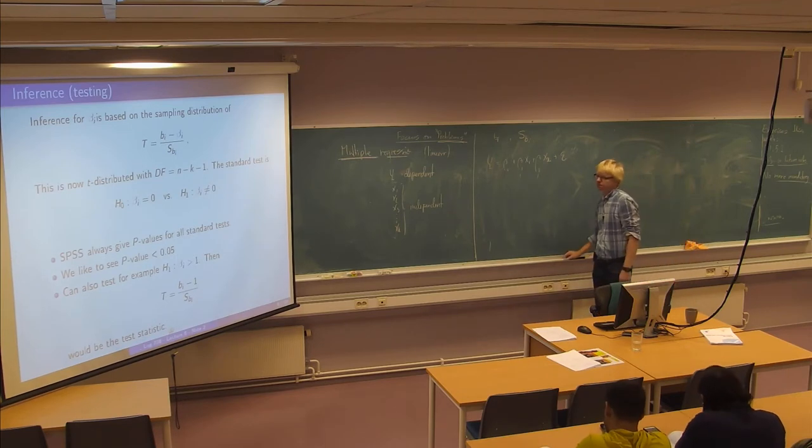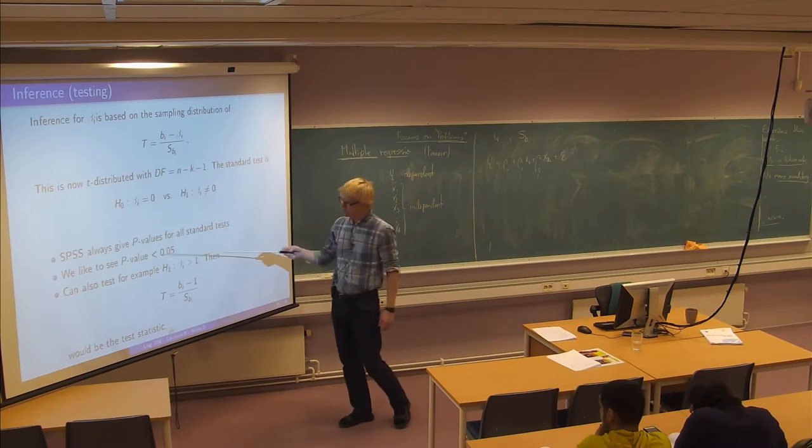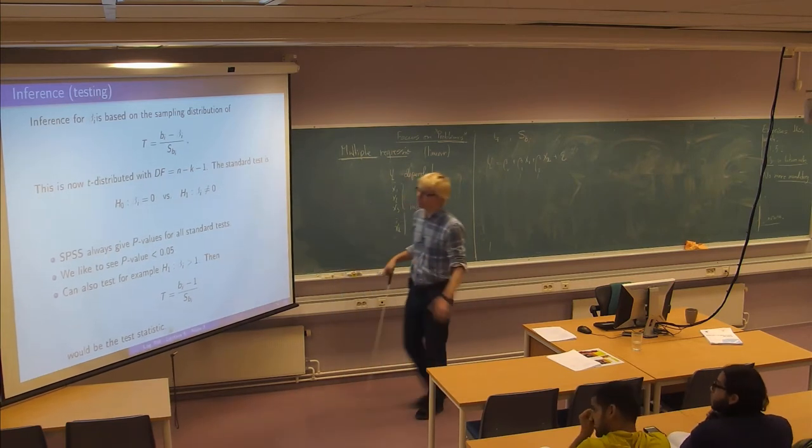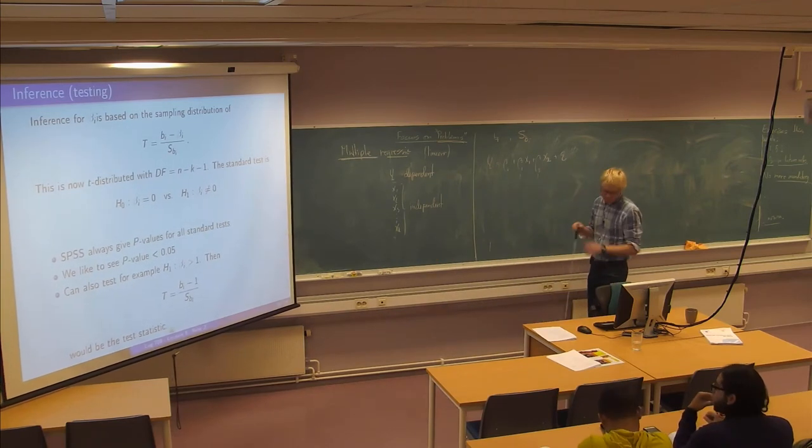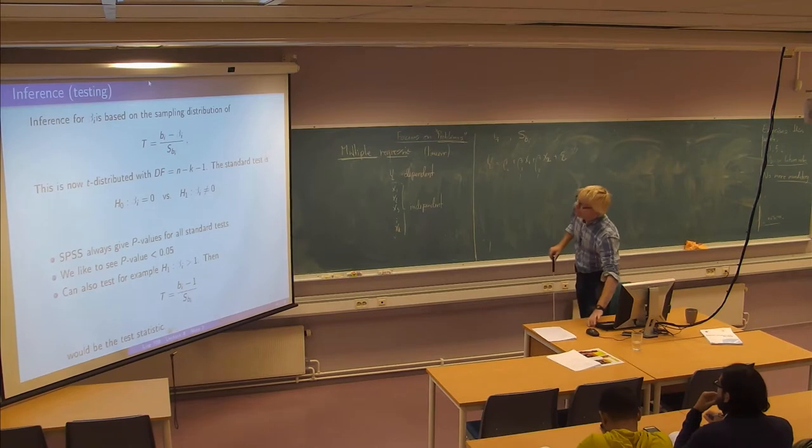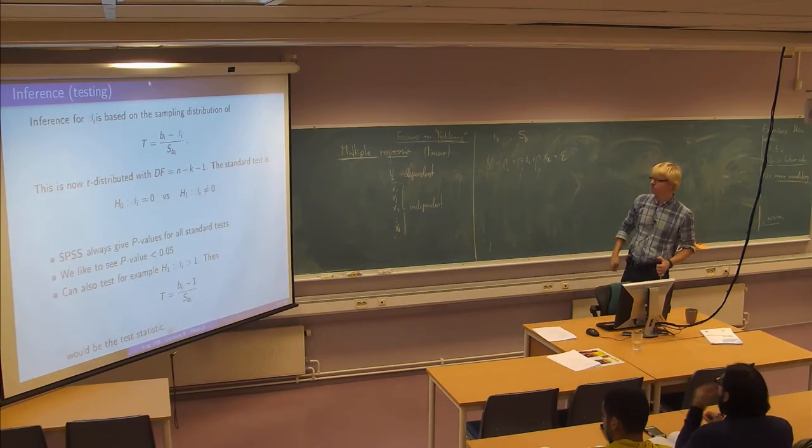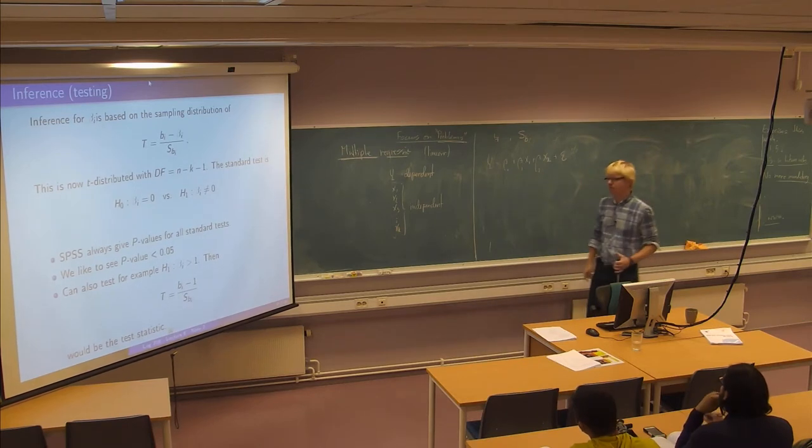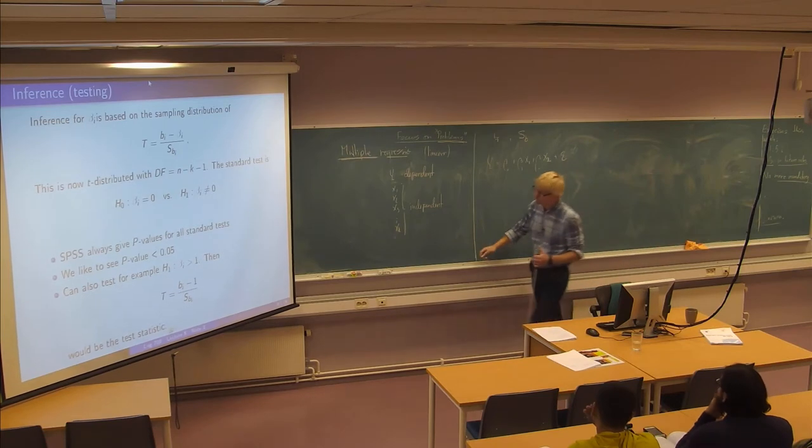And we want to see those P values less than 0.05 basically for all our variables. So this is the standard test and this is what we normally would do. And of course in science it will be also sometimes relevant to test other values for these parameters.